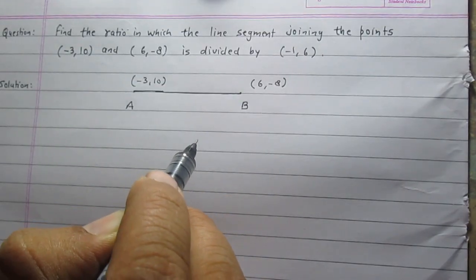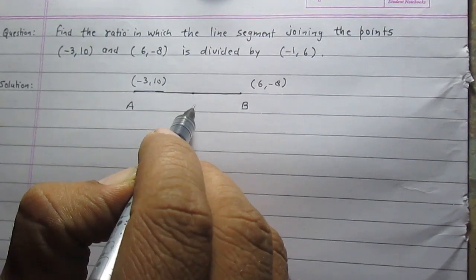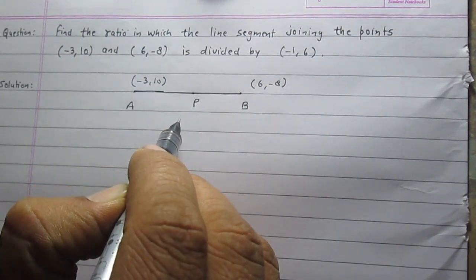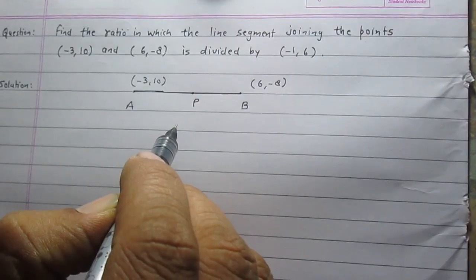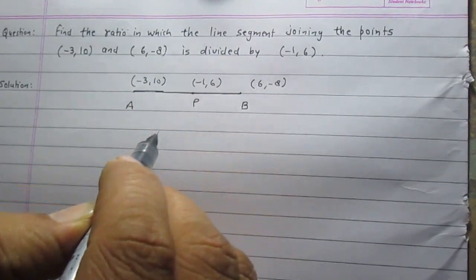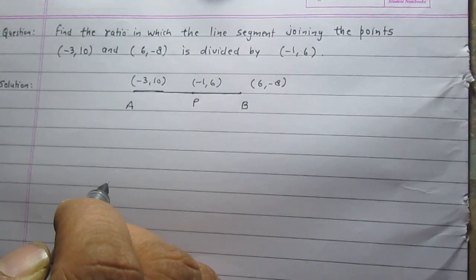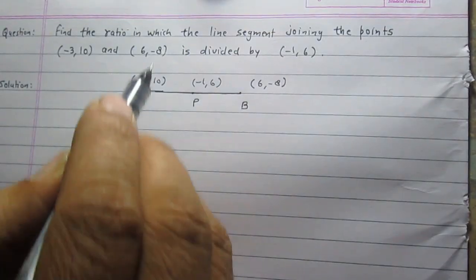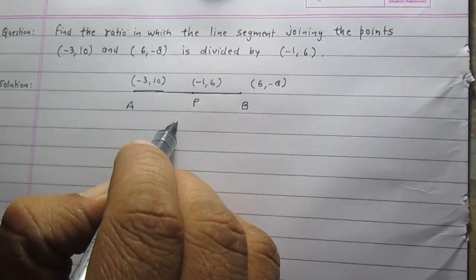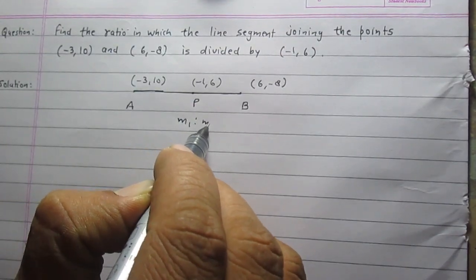There is a third point lying on line segment AB. Let us consider this point is P. Its coordinates are (-1, 6). Point P is dividing the line segment in some ratio and we have to find that ratio. Let us consider the ratio in which point P is dividing line segment AB is m₁ : m₂.